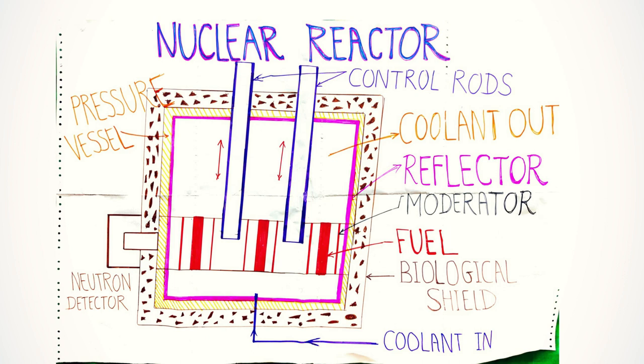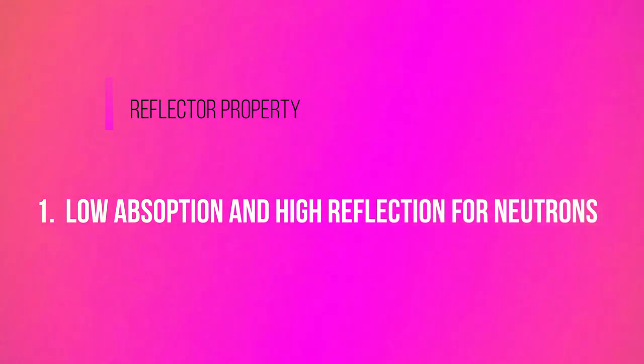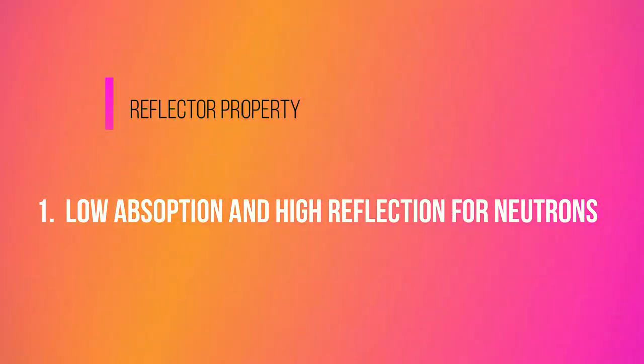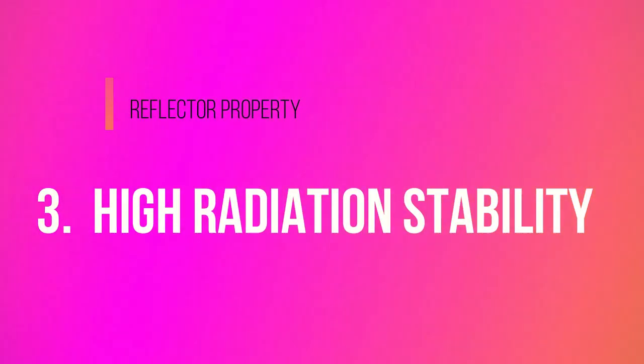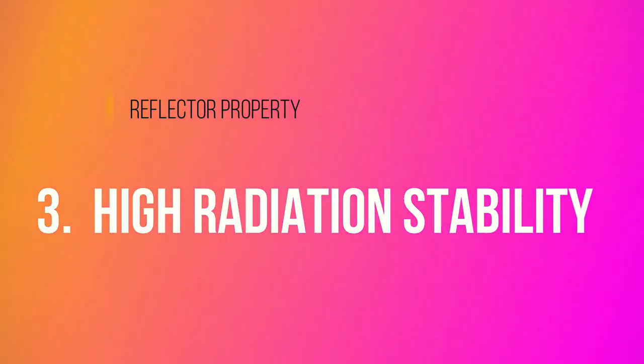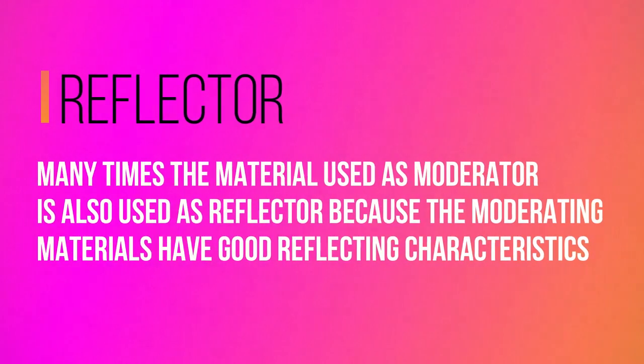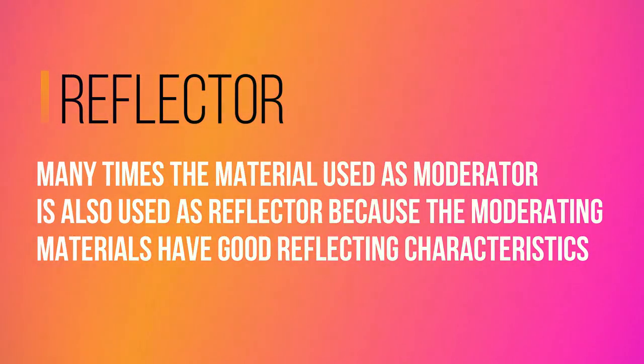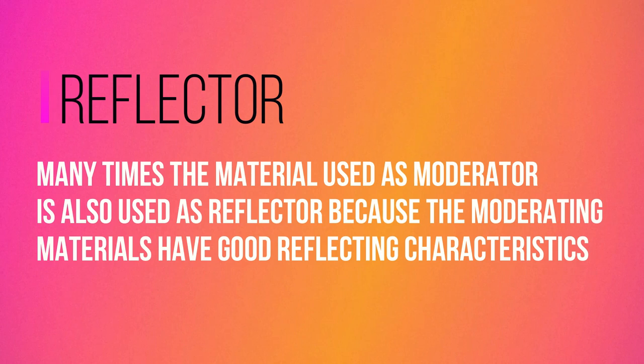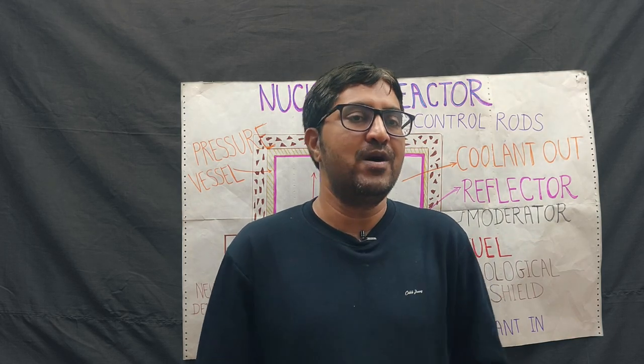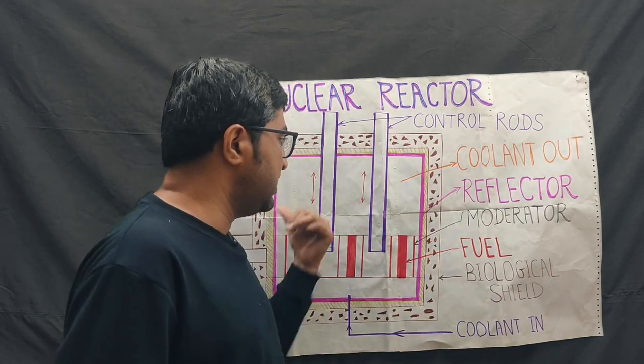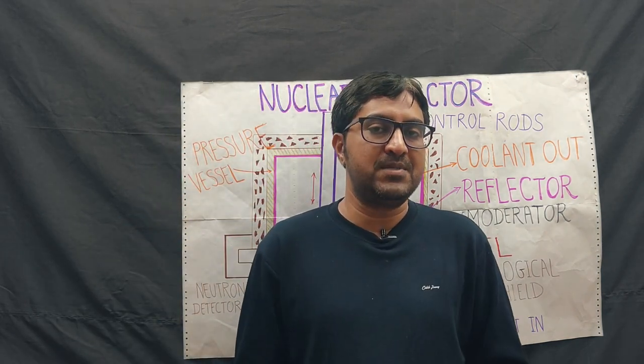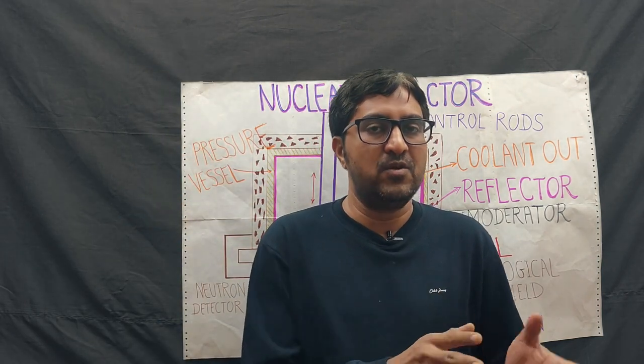The required properties of good reflectors are low absorption and high reflection for neutrons, high resistance to oxidation and irradiation, as well as high radiation stability. Many times the material used as moderator is also used as reflector because moderating materials have good reflecting characteristics. H2O, D2O, and carbon are also used as reflectors.